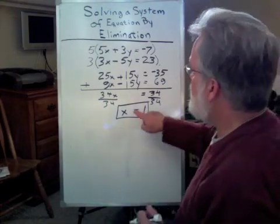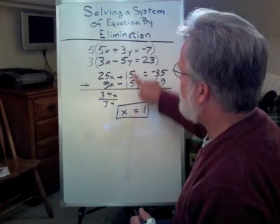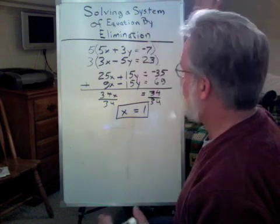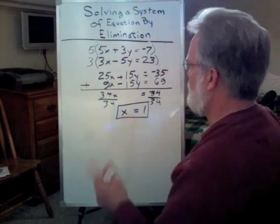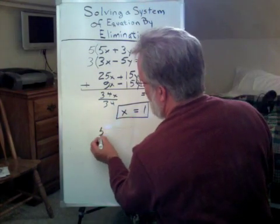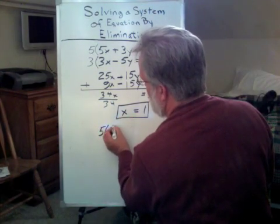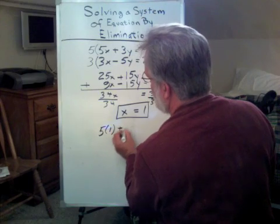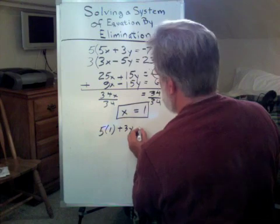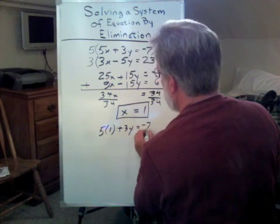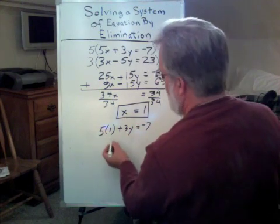Part 2 of the equation is to take this and put it back into one of these two equations. I don't care which one. Let's go with the top one. So, now I say 5 times 1 plus 3 times y equals negative 7. Of course, this is 5.